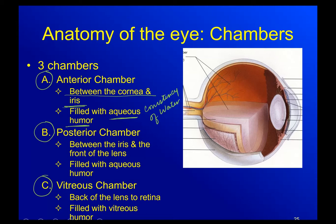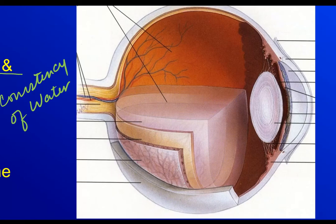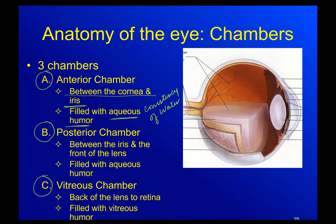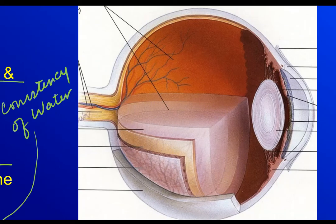The anterior chamber is the space between the cornea — the clear glass cover — and the iris. The second chamber is the posterior chamber, which is really tiny and sits between the back of the iris and the front of the lens. It is also filled with aqueous humor. That little teeny tiny space behind the iris is the posterior chamber.